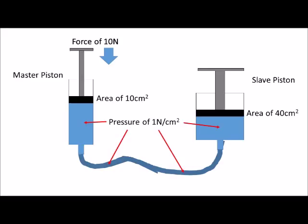The slave piston has an area of 40 cm², therefore the force is 40 newtons. This is therefore a magnifier system.